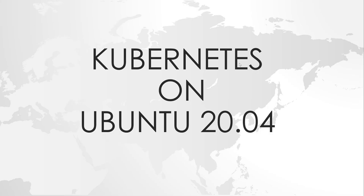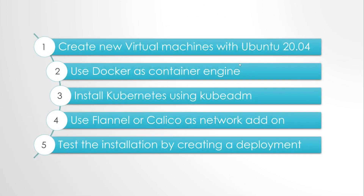In this video, I will show you how to install Kubernetes on Ubuntu 20.04. These are the steps which I will be covering for this complete installation process: the first one is to create virtual machines using Ubuntu 20.04, then using Docker as the container engine, and later installing Kubernetes using the kubeadm tool. For the CNI we will be using either Flannel or Calico. The final step would be to create a deployment and test the complete installation process.